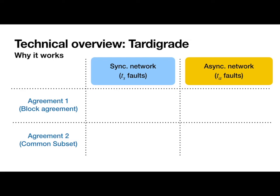If the block agreement protocol is run in a synchronous network with up to TS faults, then all parties will agree on a set of pre-blocks before the timer runs out. On the other hand, if it's run in an asynchronous network, then it might not terminate in time. But if some honest party does receive output, they still output a set of pre-blocks that satisfies some minimum validity property.